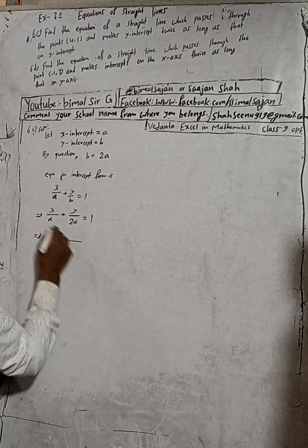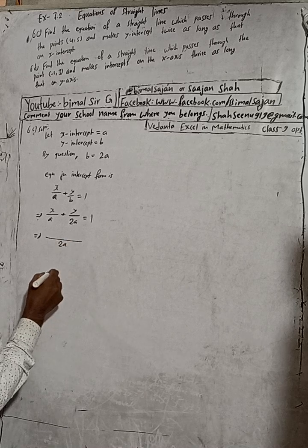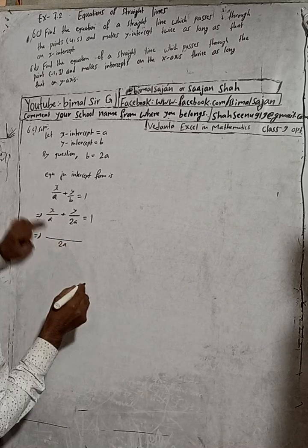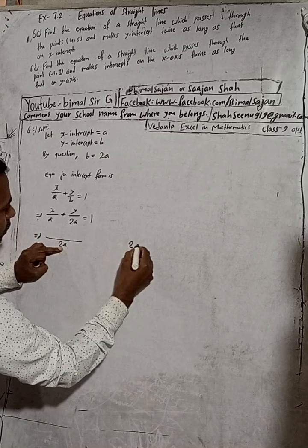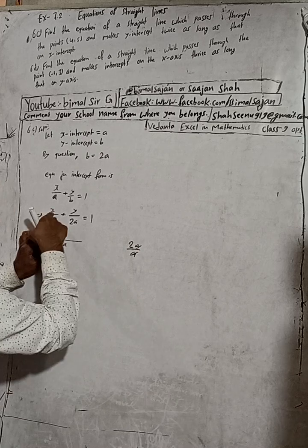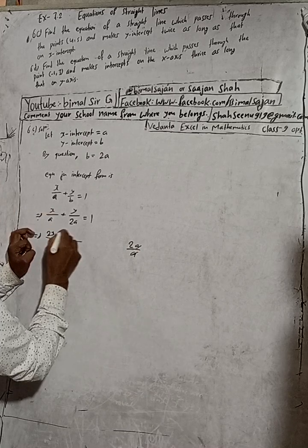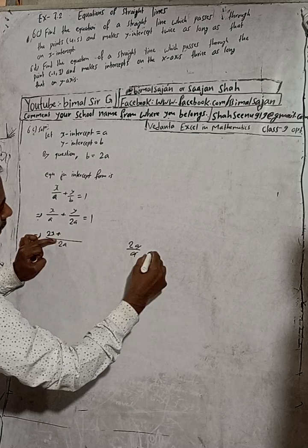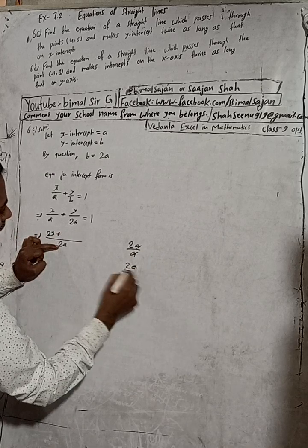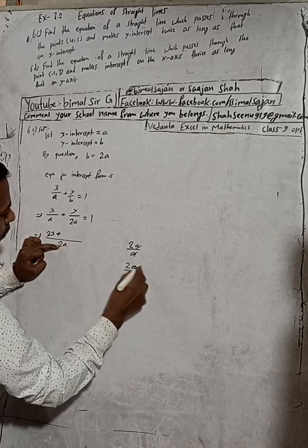Now we can see that 2a is the LCM. So here we will multiply. 2a is LCM. 2a divided by this a, what is there? 2. So with 2, we have to multiply this here. So this is 2x plus, and now this is 2a. This is 2a.